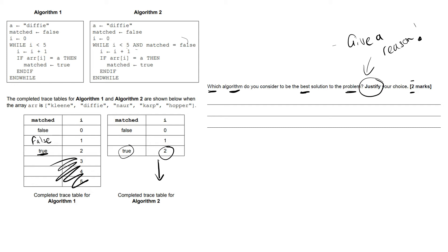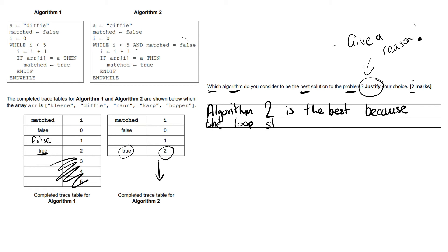So that helps us give our answer. Which algorithm do you consider to be the best solution? Algorithm two is the best — that gets the first mark for making a good choice. Then for 'justify your choice' we add a reason: because the algorithm stops, or the loop stops, when a match is found. That is a valid reason, so we've got our answer and our reason — that should give two marks in the exam.